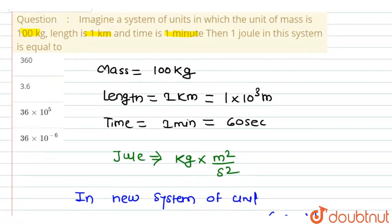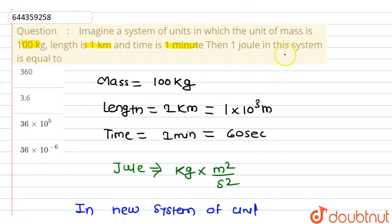So the correct answer for our question is 1 joule in the system will be equivalent to 36 into 10 raised to the power minus 6. So option D will be the correct answer.